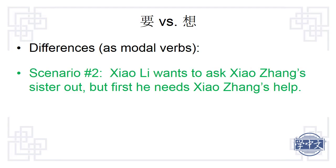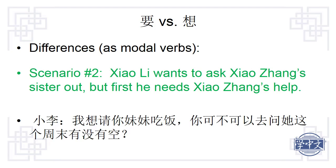Scenario number two: 小李 wants to ask Xiao Zhang's sister out, but first he needs Xiao Zhang's help. 小李 says 我想请你妹妹吃饭，你可不可以去问她这个周末有没有空 — I would like to invite your sister out to eat. Can you go ask her if she is free this weekend? From this scenario, we know that no definite plan has been made yet, so Xiao Li uses 想, not 要.